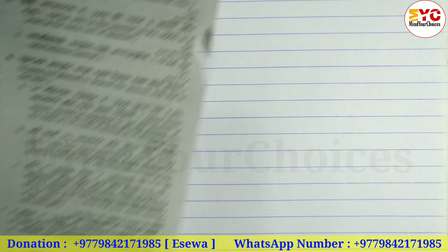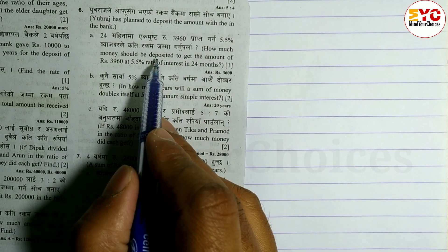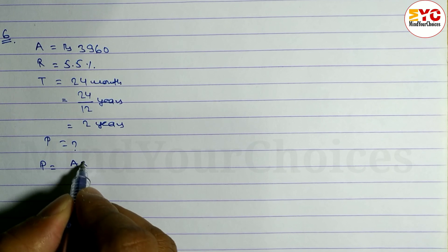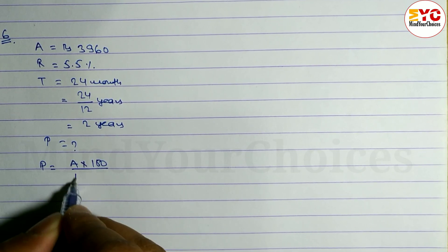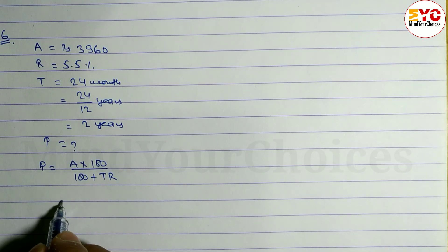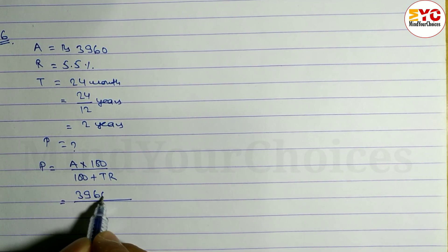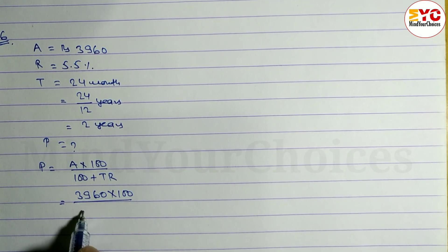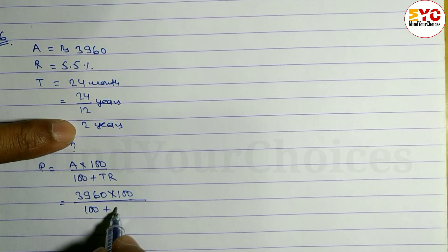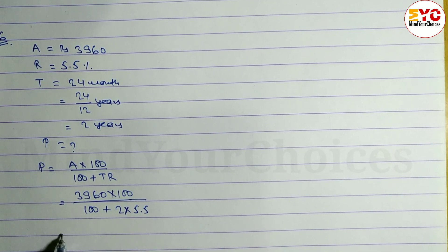Principal nikaalno paane. Look at the question — how much should be deposited means we need to find principal P. Formula kya huncha: P = A × 100 divided by (100 + T×R). A ko value diyako cha — 3960.